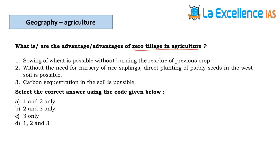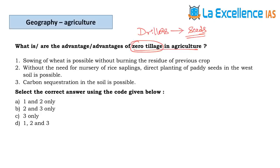The next question is about zero tillage in agriculture. In zero tillage we do not go for soil amendments or plowing. Instead, using drillers we directly put the seeds inside the soil without disturbing it — that's why it is also called no-till farming. Zero tillage means no plowing; drillers place seeds directly into the soil.